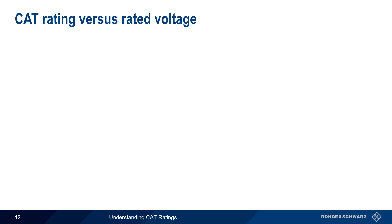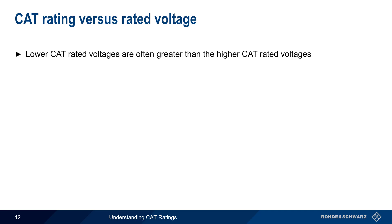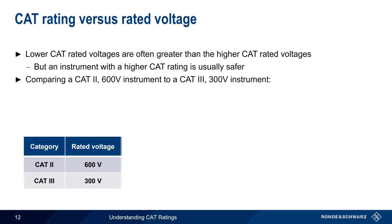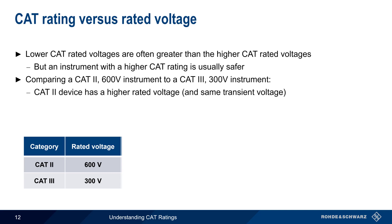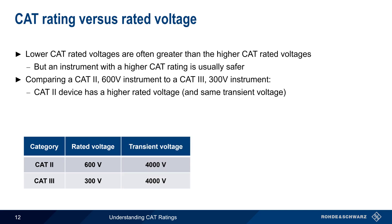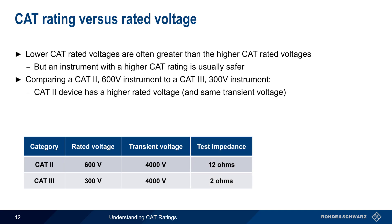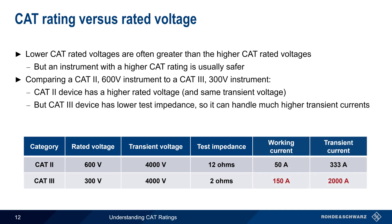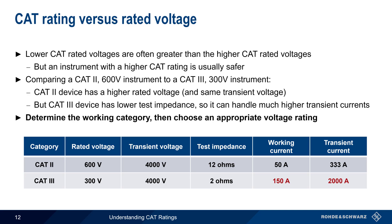When instruments have multiple CAT ratings, the lower CAT rating often has a higher rated voltage, but instruments with a higher CAT rating are usually safer. Let's compare a CAT 2 600 volt rated instrument with a CAT 3 300 volt rated instrument. The CAT 2 device has a higher rated voltage and can safely withstand the same transient voltage as the CAT 3 device. But note that the test impedance is different for these two categories. The lower test impedance of the CAT 3 device — 2 ohms versus 12 ohms — means that they can handle both a higher working current and a much higher transient or peak current. The best rule of thumb, therefore, is to first determine the category in which you are working, and then choose an instrument with an appropriate voltage rating from that category. This provides the greatest safety for both the instrument and the operator.